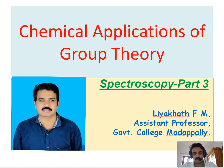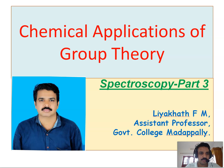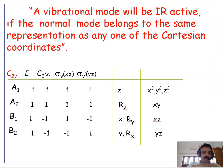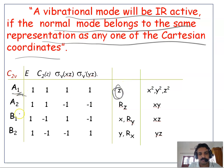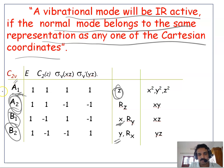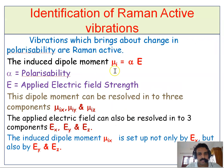Welcome back to the tutorial about the chemical applications of group theory. This is the third video. In the last video we discussed about IR active vibrations — which modes of vibrations are IR active — and we concluded that a vibrational mode will be IR active if the normal mode belongs to the same representation as any one of the Cartesian coordinates. That is, A1 mode is IR active because z transforms as A1, B1 mode is IR active because x transforms as B1, and B2 mode is IR active because y transforms as B2. But A2 is always IR inactive in C2v-type molecules because neither of the Cartesian coordinates belongs to A2.